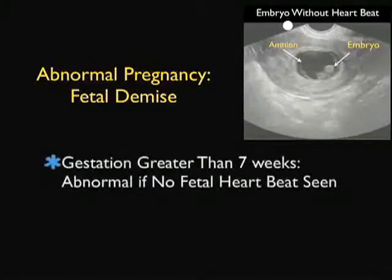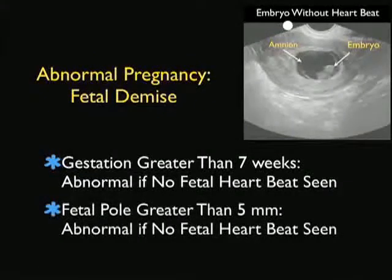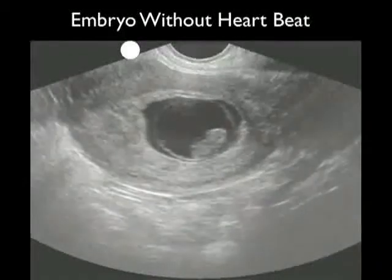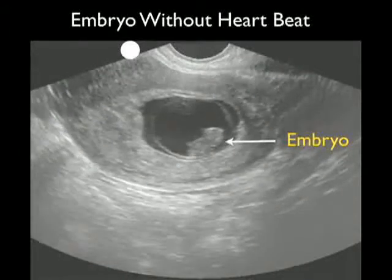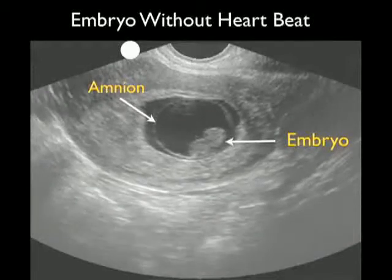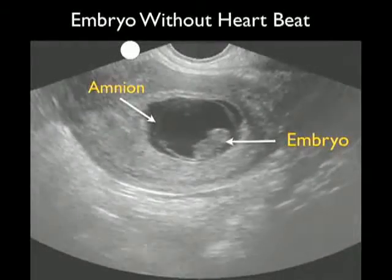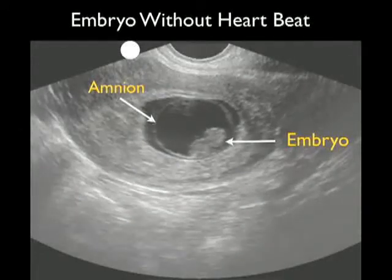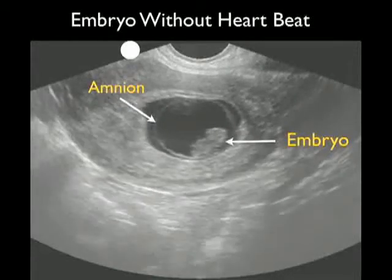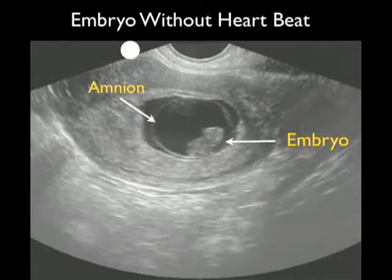Other indicators of abnormal pregnancy with fetal demise include a gestation greater than 7 weeks with no fetal heartbeat, and a fetal pole greater than 5 millimeters with no fetal heartbeat. This was an unfortunate case showing a large fetal pole greater than 5 millimeters without a heartbeat, indicative of embryonic demise. We also see a large circular amnion within the gestational sac. While it's important to pick up these findings, I always get a confirmatory ultrasound and/or OBGYN consultation before giving the patient the news of fetal demise.